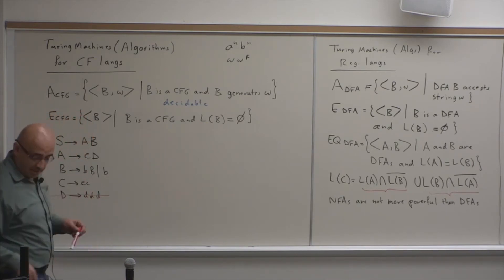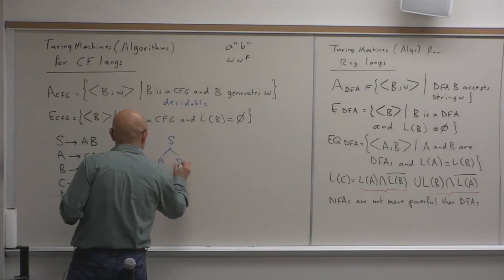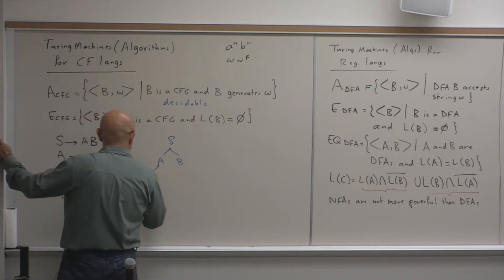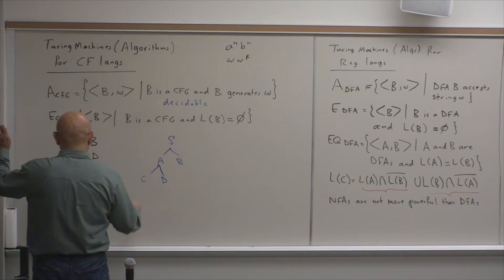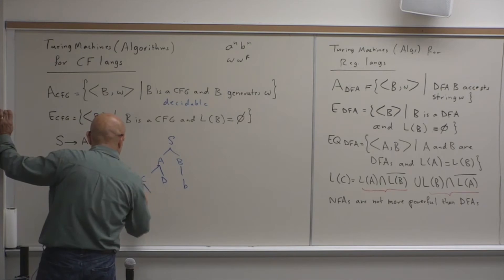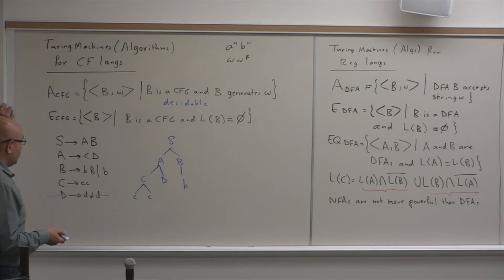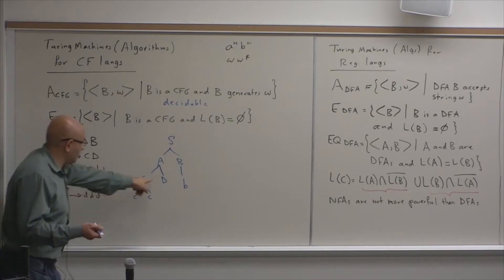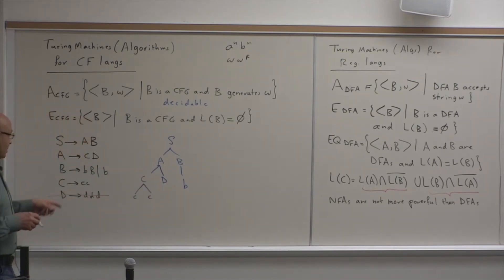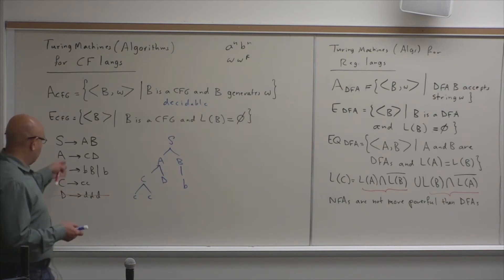If there is no derivation that goes all the way to terminals, then the language is empty. For example, doing a derivation without a definition for D: S → AB → CDB → CCB → ... but for D, I cannot substitute anything. There is no definition for D in terms of terminals, so I cannot derive any string. Can you think of a general algorithm that would detect that the language is empty?